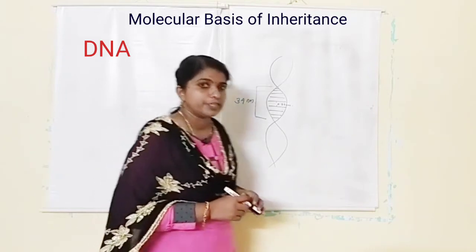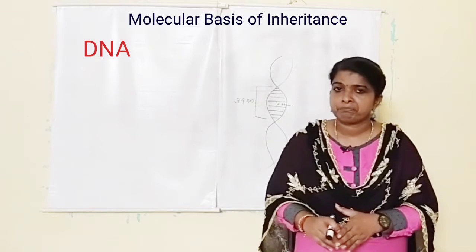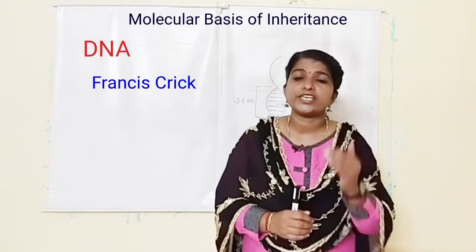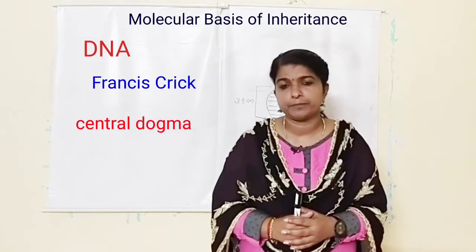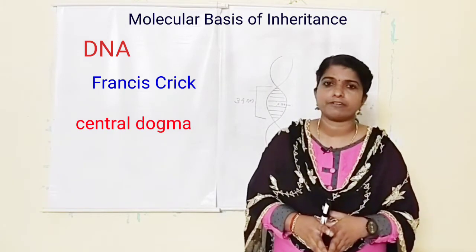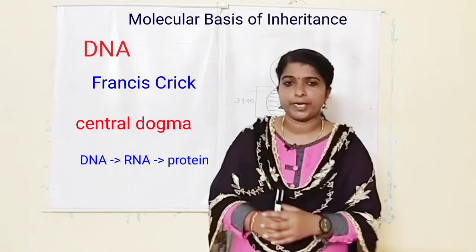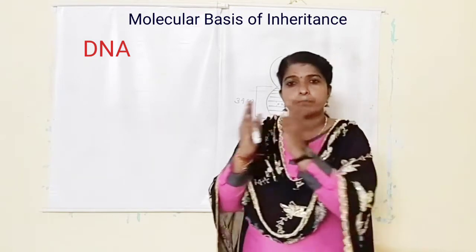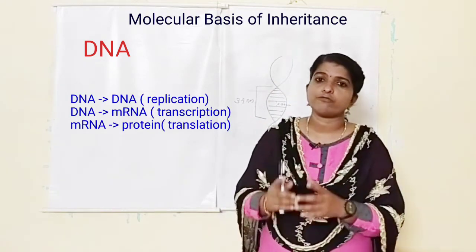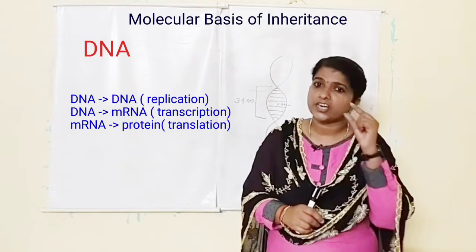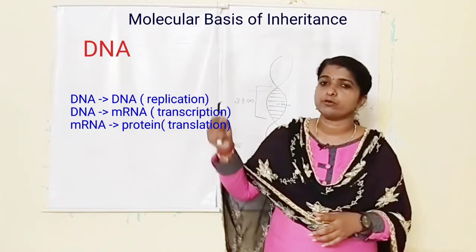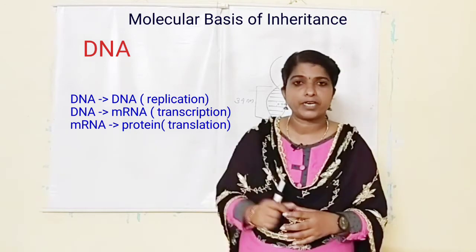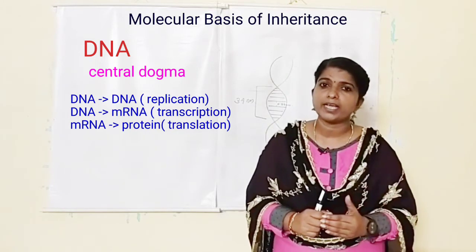These are the important features of the DNA double helix. Later, Crick proposed another important concept: the central dogma of molecular biology. This is the flow of information from DNA to RNA to protein. DNA replicates itself, and DNA can produce RNA — the process of RNA formation from DNA is known as transcription. The RNA then produces protein, and that process is known as translation. This flow of information is known as the central dogma, as proposed by Crick.